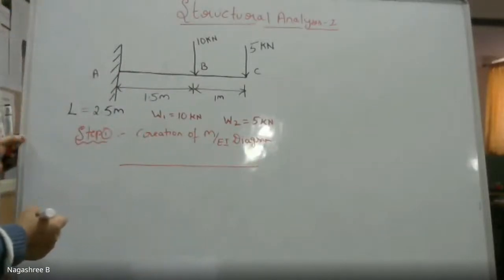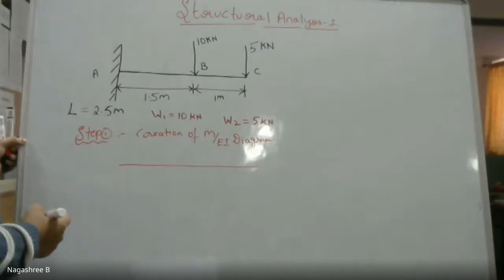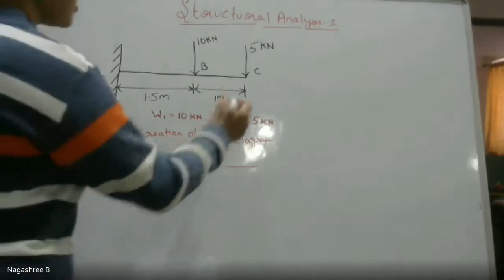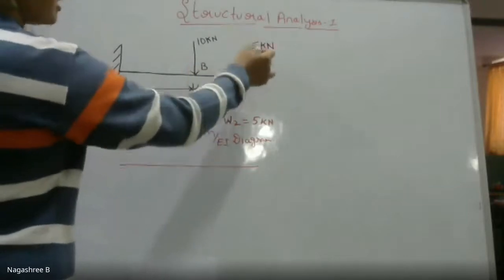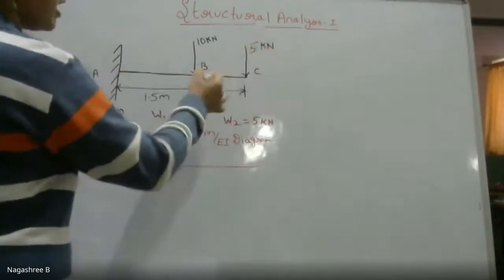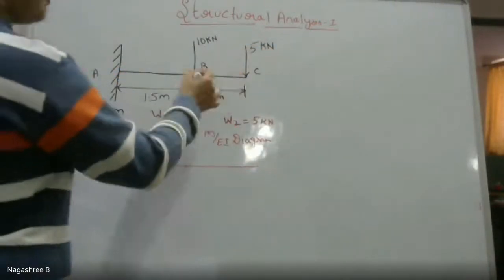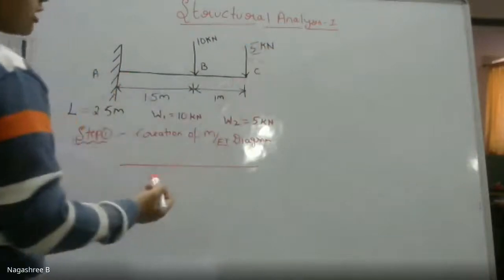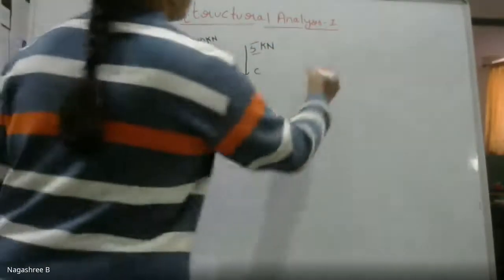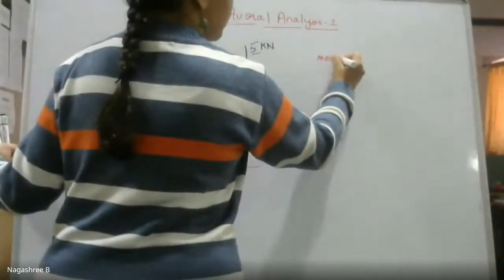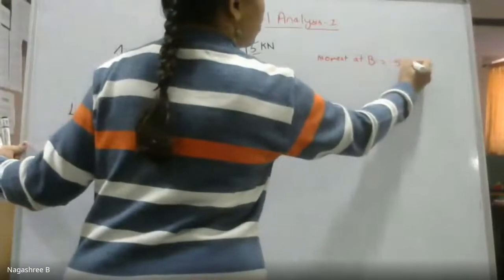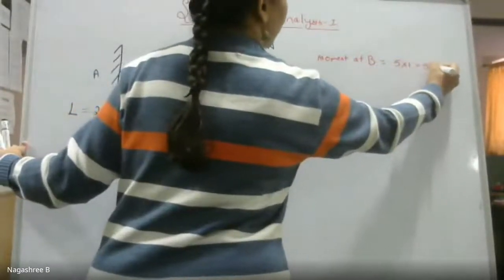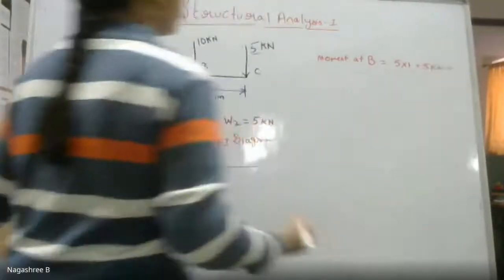At point C, I have the load of 5 kN. The moment at point B due to the load at C — that is 5 kN — is equal to 5 into 1, which equals 5 kN·meter.